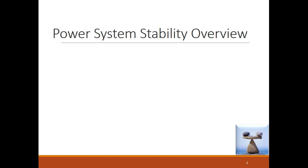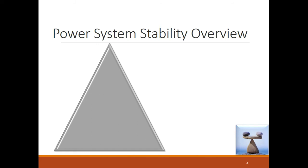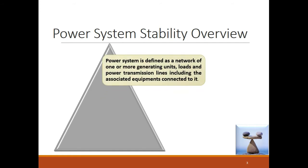Power system stability overview. Before entering into stability studies, what do we mean by the power system? The power system is defined as a network of one or more generating units, loads, and power transmission lines including associated equipments connected to it. The power system comprises generation, transmission lines, distribution network, and loads. From the generating station up to the load end, there are different equipments involved.